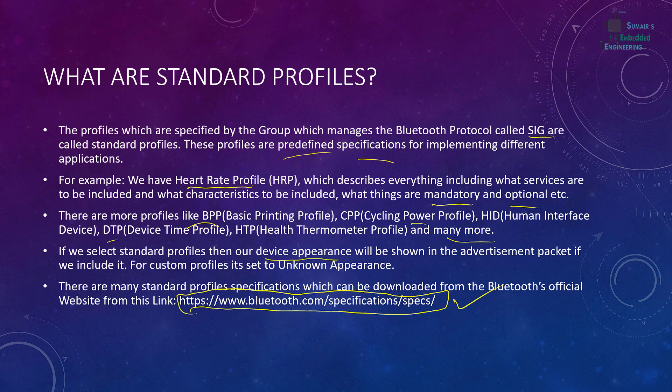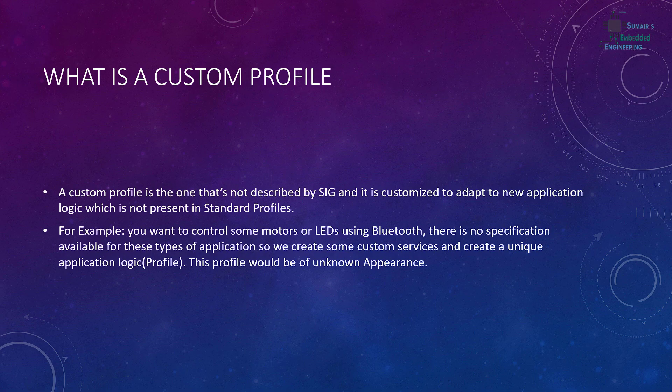If we select the standard profiles, our device appearance will be shown in the advertisement packet if we include it. For example, if I'm using a Heart Rate Profile, I can use the heart rate as my appearance and it will be shown in the advertisement packet as well. For custom profiles, normally we set the appearance to unknown because the application is customized and different from standard profiles. This unknown appearance doesn't bother us too much while coding. We can also include manufacturer or vendor specific data if needed.